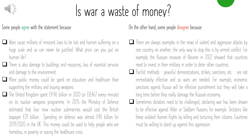Others argue that war is not a waste of money, as pacifist methods are not effective in many cases — peaceful demonstrations, strikes and economic sanctions are not immediately effective. Economic sanctions against Russia may be effective long-term but not short-term. Some argue war is sometimes required. Others believe dictators need to be challenged — declaring war has been shown to be effective against Hitler and Saddam Hussein. Dictators like these have violated human rights by killing and torturing their citizens. The ultimate role of any government is to protect its citizens, and therefore they must have viable armies to protect them from aggressive attacks.